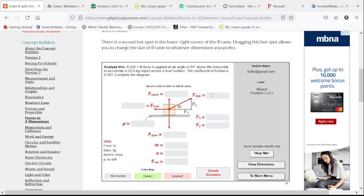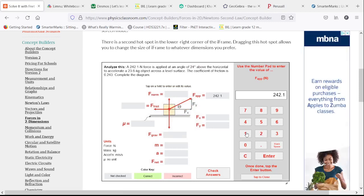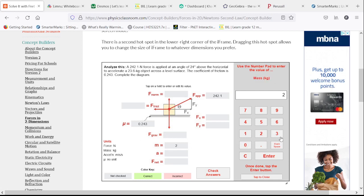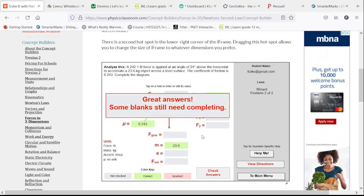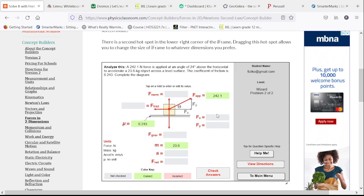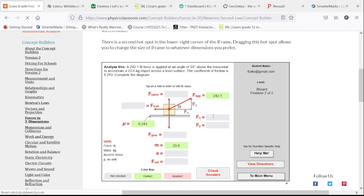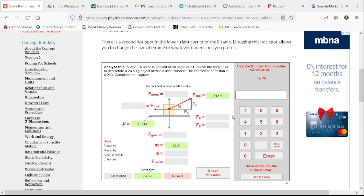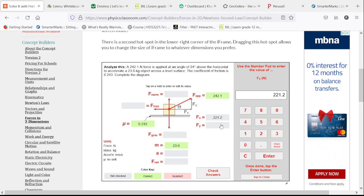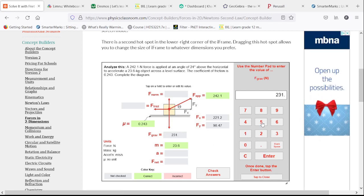The second one is another identical approach. Our applied force is 242.1 Newtons, coefficient of friction is 0.243, and our mass is 23.6 kilos. The first two we can resolve are the horizontal and vertical components. The 242.1 times the cosine of 24 is 221.2. Our vertical component, the sine of 24, works out to 98.47. The force of gravity is 23.6 times 9.81, which is 231.5.